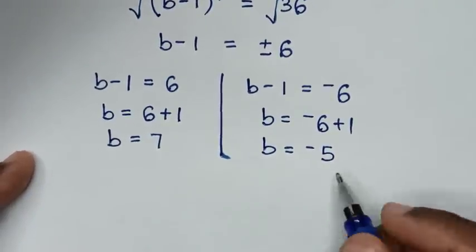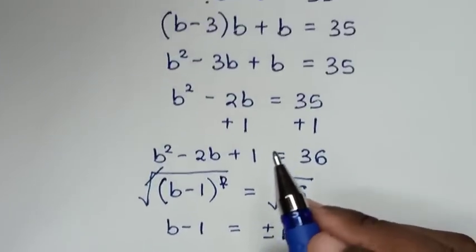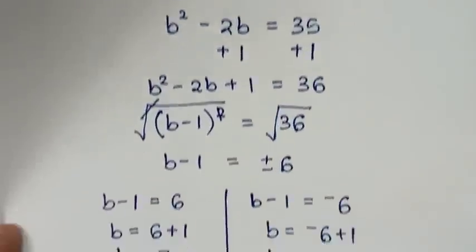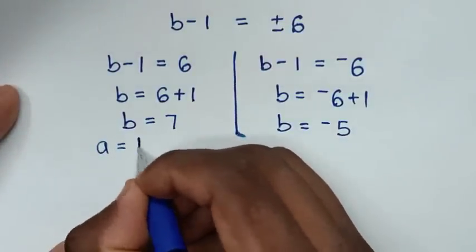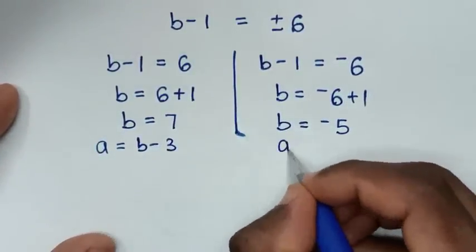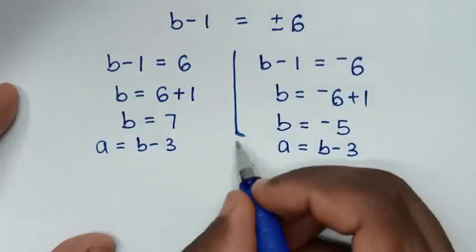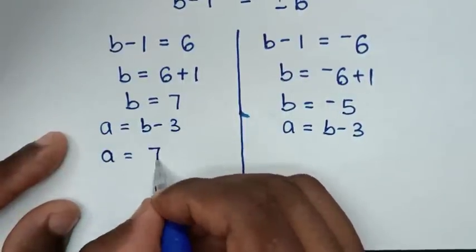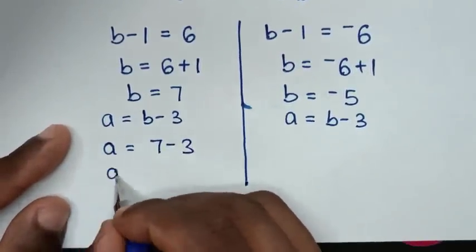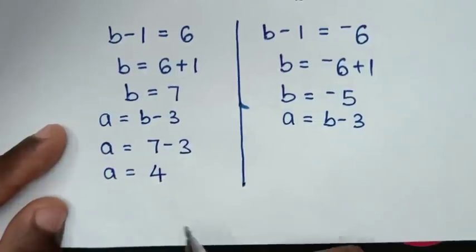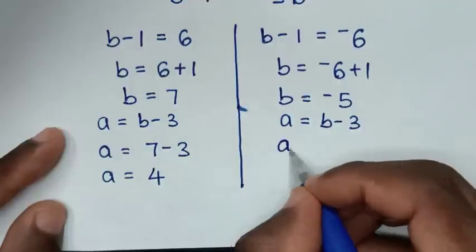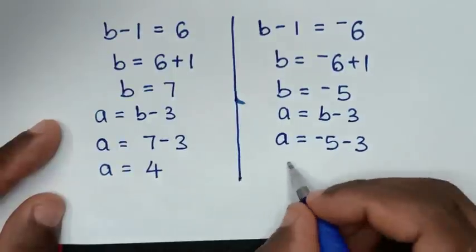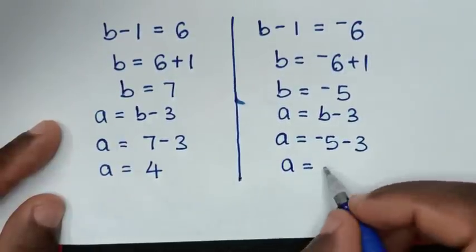We've got the values of B. Recalling that A equals B minus 3: for the first solution, A equals 7 minus 3, which is 4. For the second solution, A equals negative 5 minus 3, which is negative 8.